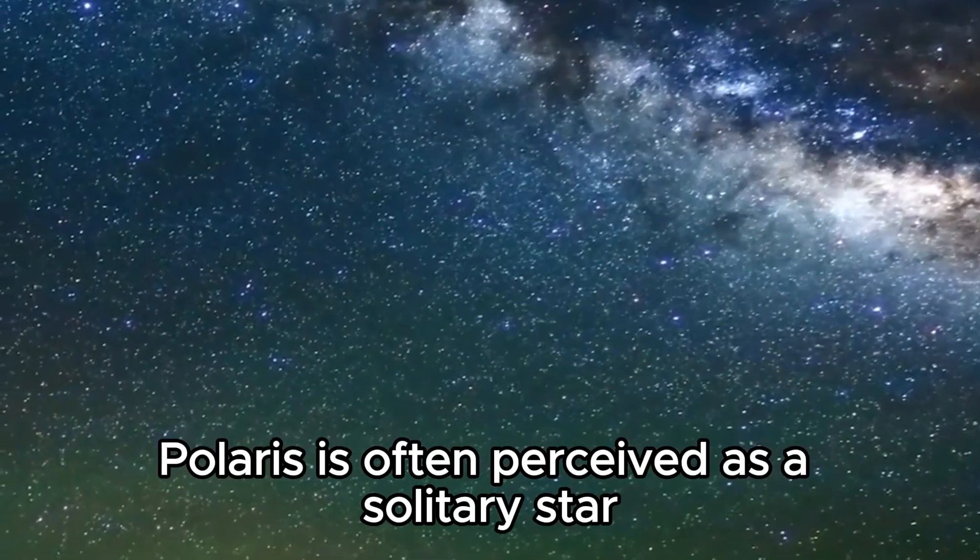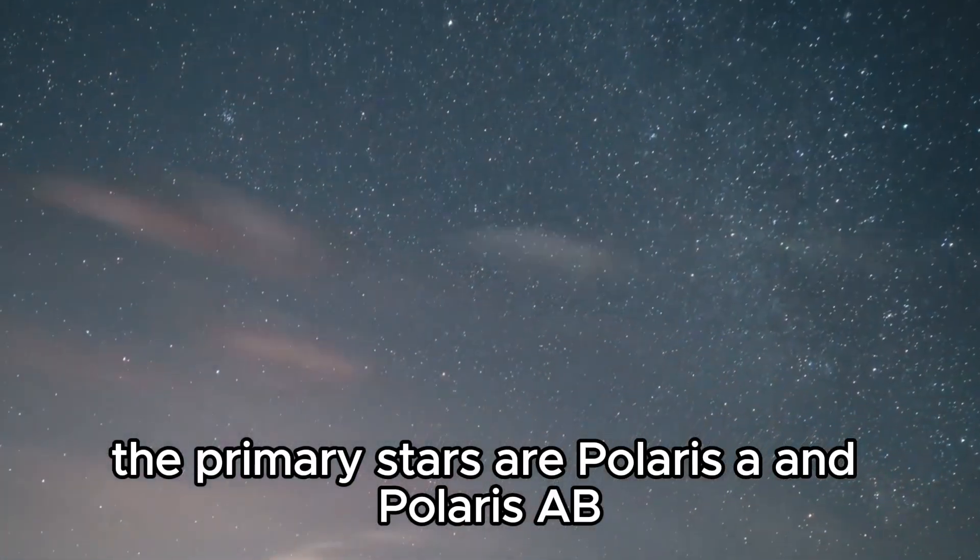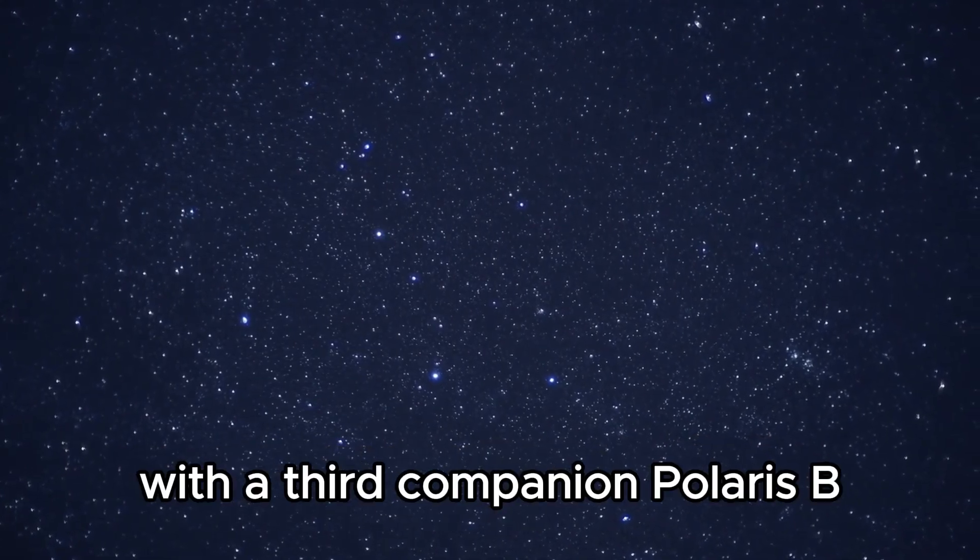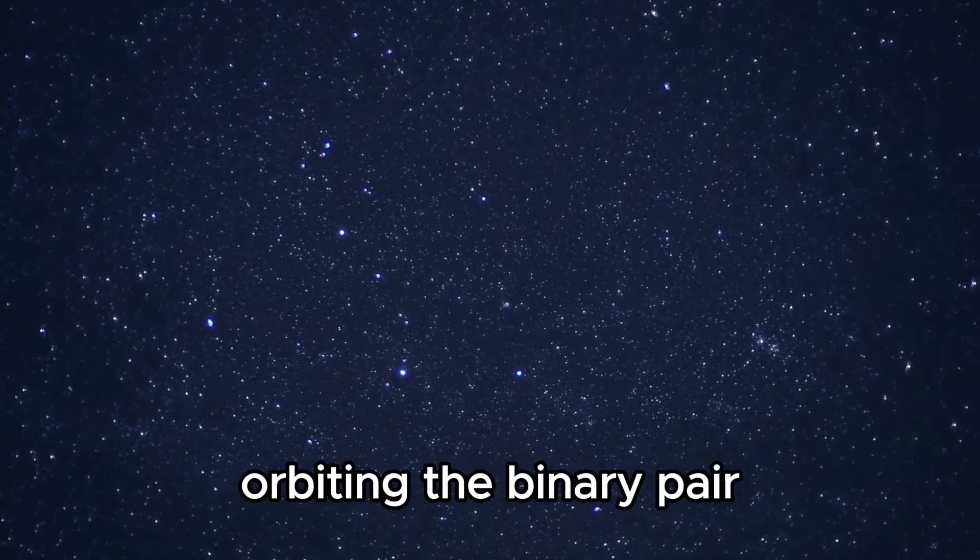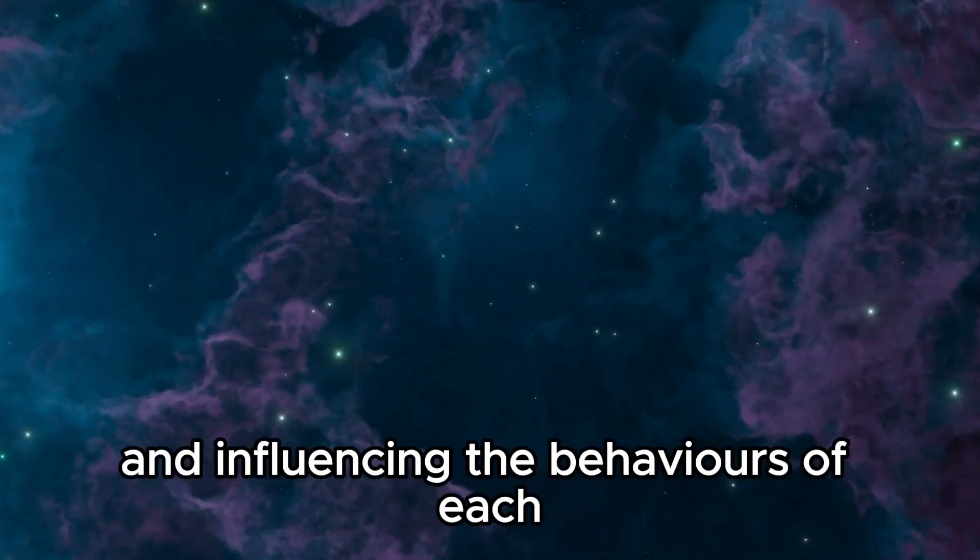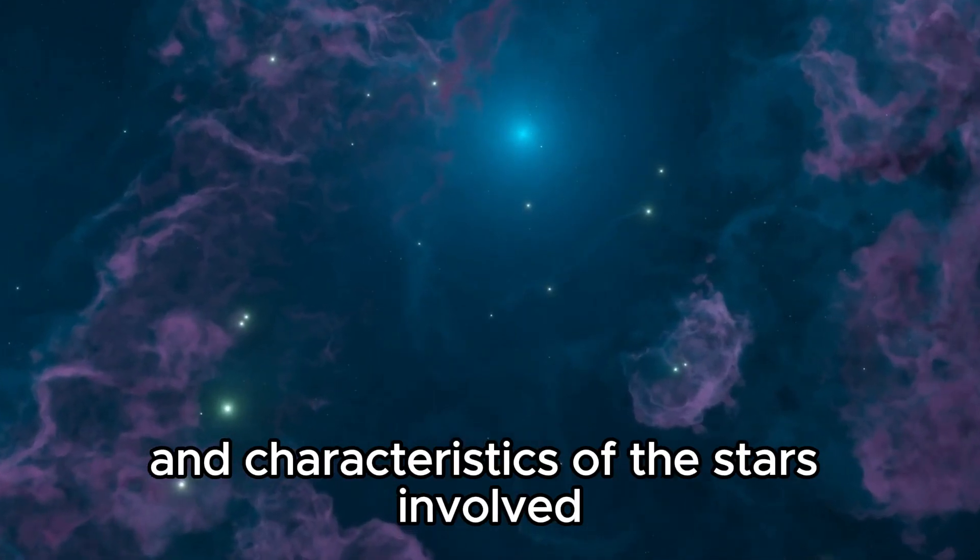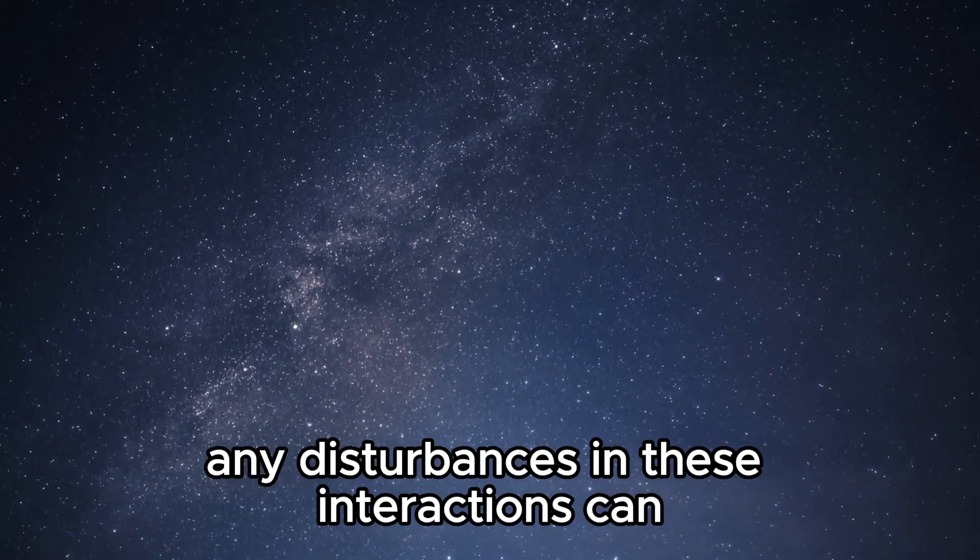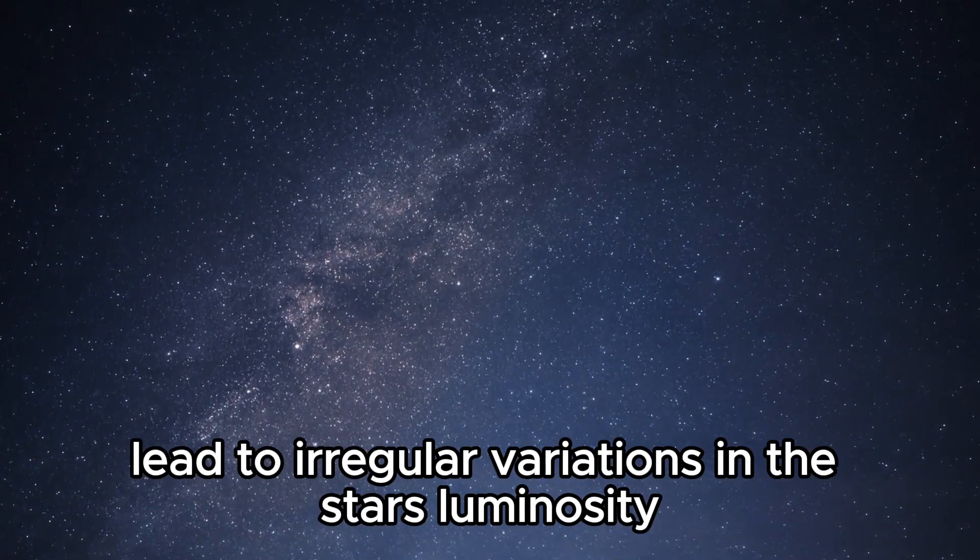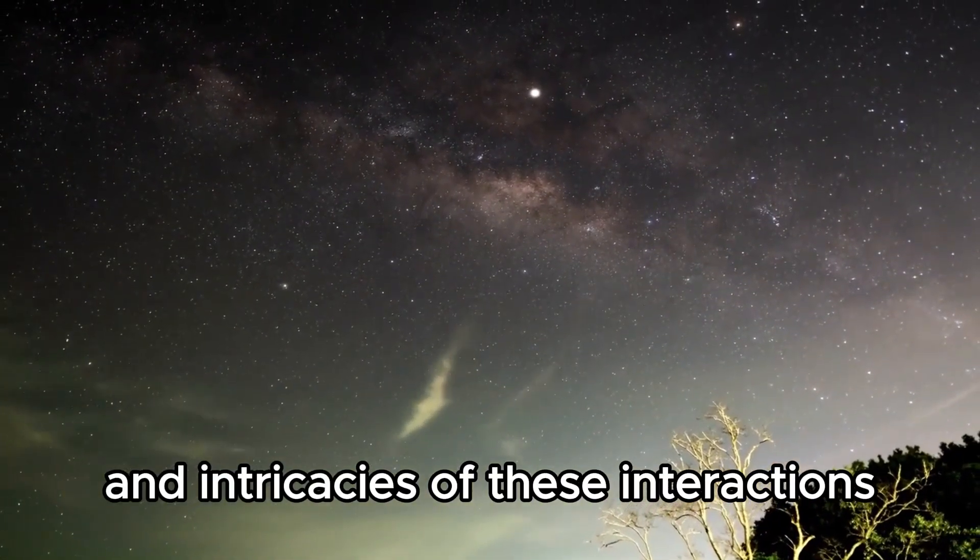Polaris is often perceived as a solitary star, but it is actually part of a complex triple star system. The primary stars are Polaris A and Polaris AB, appearing as a single star to the naked eye, with a third companion, Polaris B, orbiting the binary pair. The interactions among these stars create a gravitational pull shaping their orbits and influencing the behaviors of each. Such intricate dynamics also affect the luminosity and characteristics of the stars involved. Any disturbances in these interactions can lead to irregular variations in the star's luminosity or pulsation patterns. However, the exact mechanisms and intricacies of these interactions are not yet known.